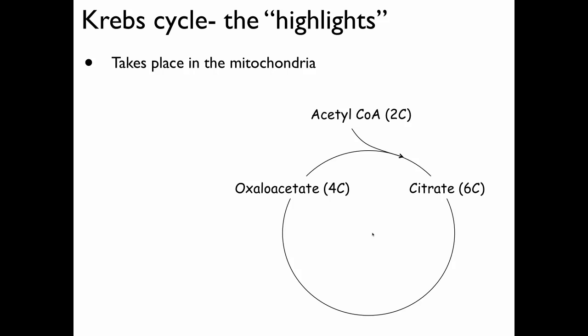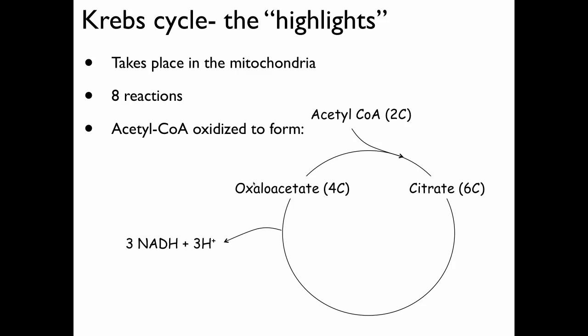The Krebs cycle takes place in the mitochondria, specifically the matrix of the mitochondria. There are eight reactions that end up reforming the initial substrate. In the process of those eight reactions, acetyl-CoA is oxidized to form three NADH, one FADH2, and one ATP. Because two carbons are lost in the reformation of the four-carbon molecule of oxaloacetate, two molecules of carbon dioxide are produced, which can then leave the mitochondria, pass out of the cell, into the blood, and that blood returns it to the lungs.